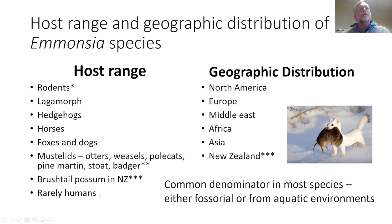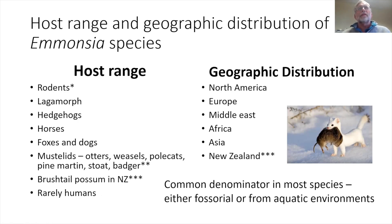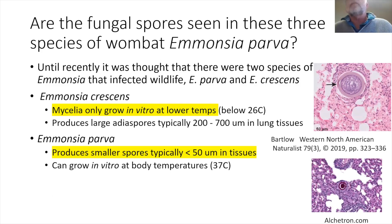It has been associated with disease in humans, but that's very rare. A common thread across nearly all these affected species — except horses — is that they are fossorial, meaning they spend time underground or digging in the ground, or in the case of otters and some rodents, they are aquatic species. There were differences in organism characteristics that didn't really match up with the assumed identification of Emmonsia parva, and then genetic studies sorted it all out.